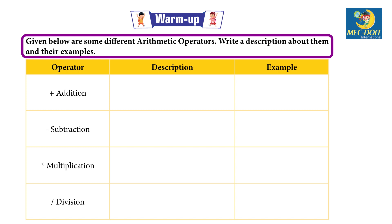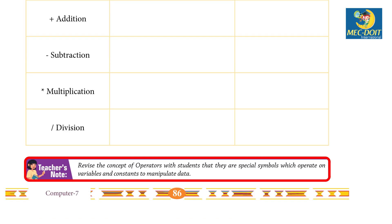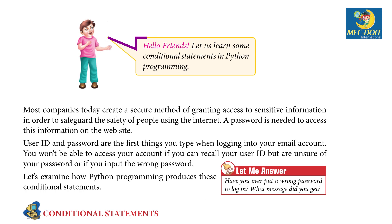Warm up: given below are some different arithmetic operators — write a description about them and their examples. Teachers should revise the concept of operators with students: these are special symbols that operate on variables and constants to manipulate data.